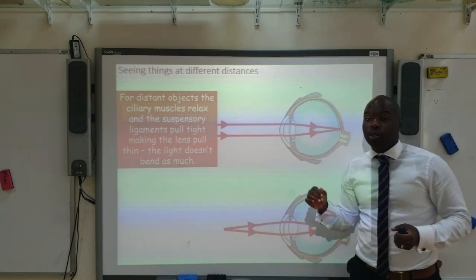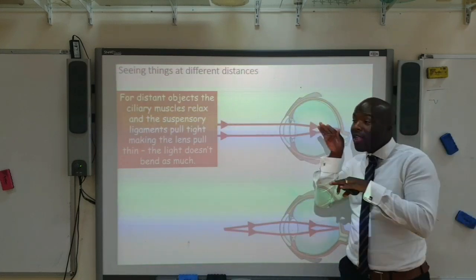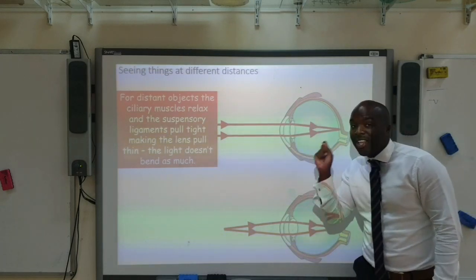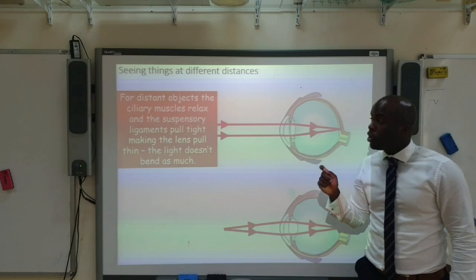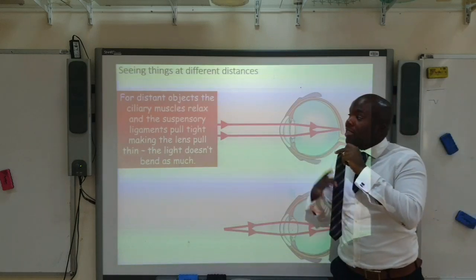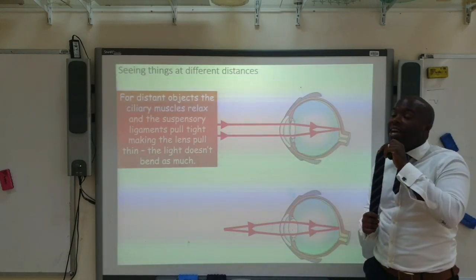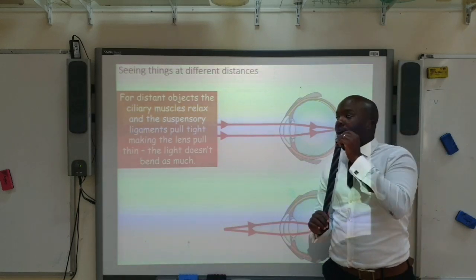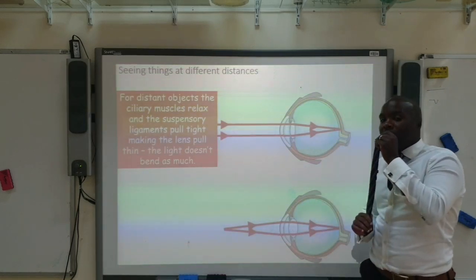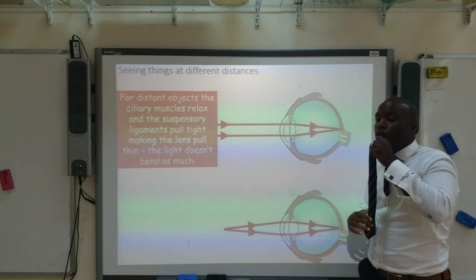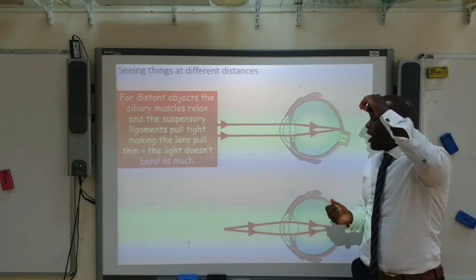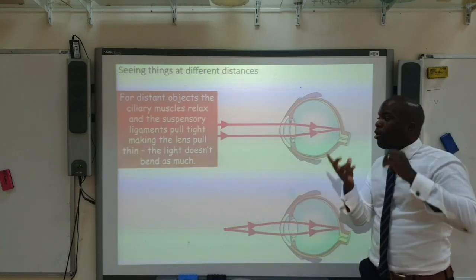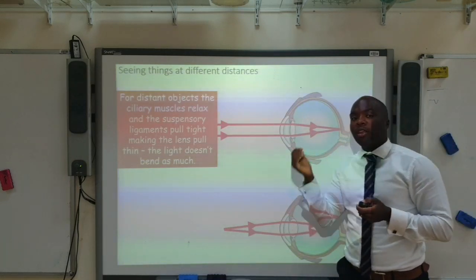For a distant object, the light rays are travelling almost parallel, so they do not have to be refracted as much. The ciliary muscle will relax, causing the suspensory ligaments to pull tight. This pulling tight of the suspensory ligaments stretches and makes the lens thin, because light doesn't have to be bent as much.